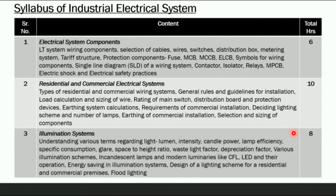There are 5 chapters in Industrial Electrical System. The first chapter is Electrical System Components, covering different types of materials required for wiring — cables, wires, switches, contactors, distribution boxes, metering systems, and tariff structure. It also covers single line diagrams (SLD) of a wiring system, contactors, isolators, relays, MPCB, electric shock, and electrical safety practices.